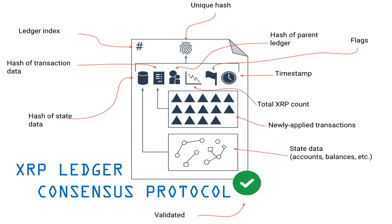What is the XRP ledger? The XRP ledger is the software utilizing a consensus protocol — a set of instructions — in which designated servers, called validators, come to an agreement on the order and outcome of XRP transactions, which take place every 3 to 5 seconds.